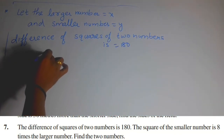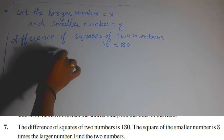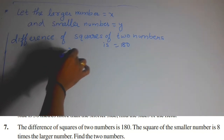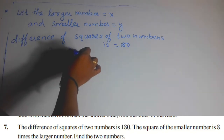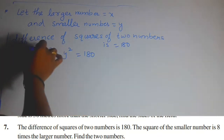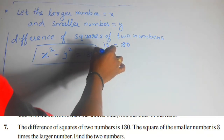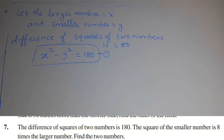The square of the larger number is x squared, and the square of the smaller number is y squared. The difference gives us x squared minus y squared is equal to 180. Let this be equation number 1. Now one more condition is given: the square of the smaller number is 8 times the larger number.